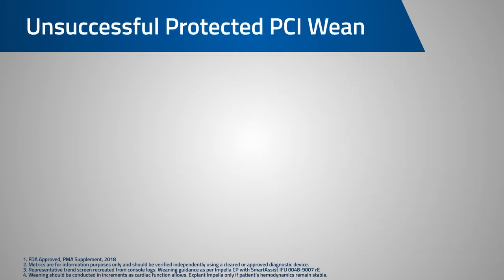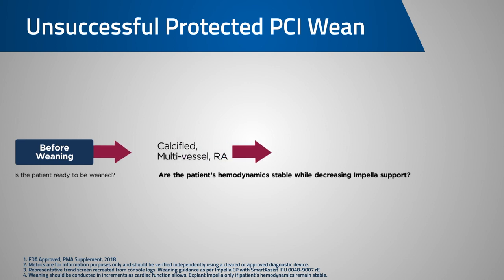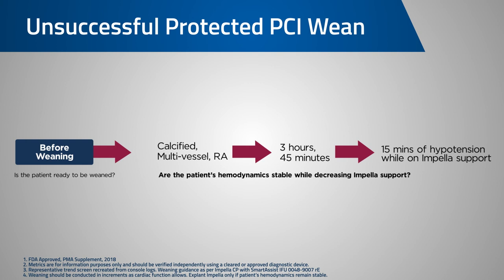Now let's look at an unsuccessful wean. Similar to our first case, we want to consider the patient presentation and current condition. In this case, the patient presented with calcified, multi-vessel disease and experienced 15 minutes of hypotension on Impella support.